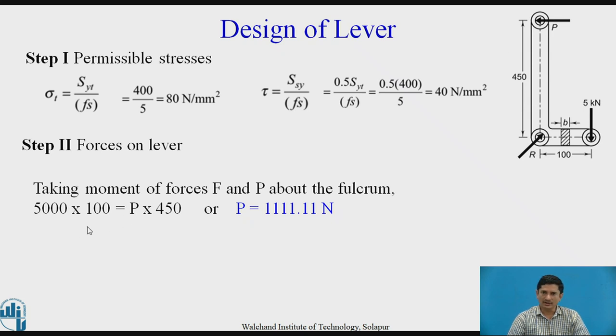5000 into 100, 5000 is the force 5 kilonewton, which is 5000 Newton, then multiplied by 100, we can get the moment of the force. That is equal to P, which is unknown, multiplied by the arm length 450. We can get P equals around 1111 Newton.